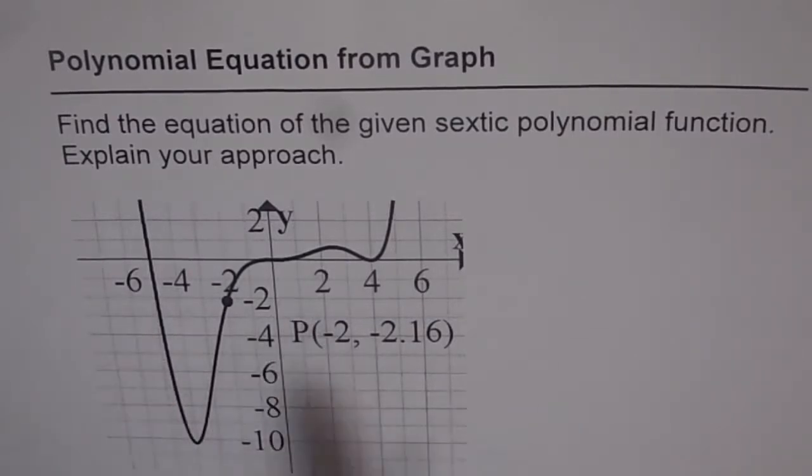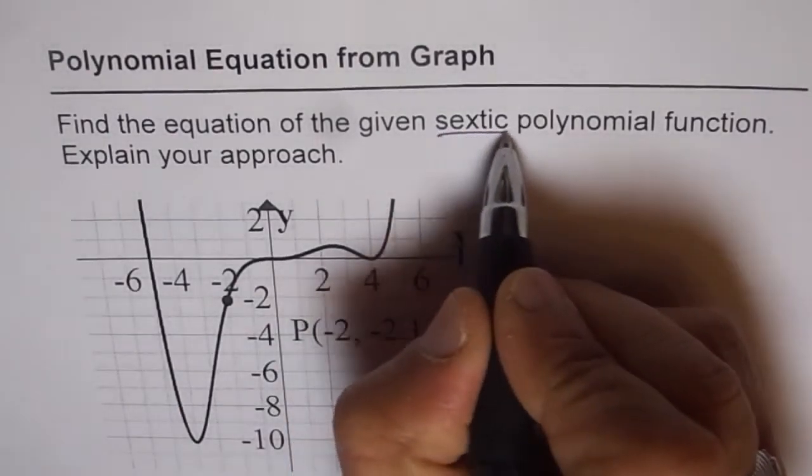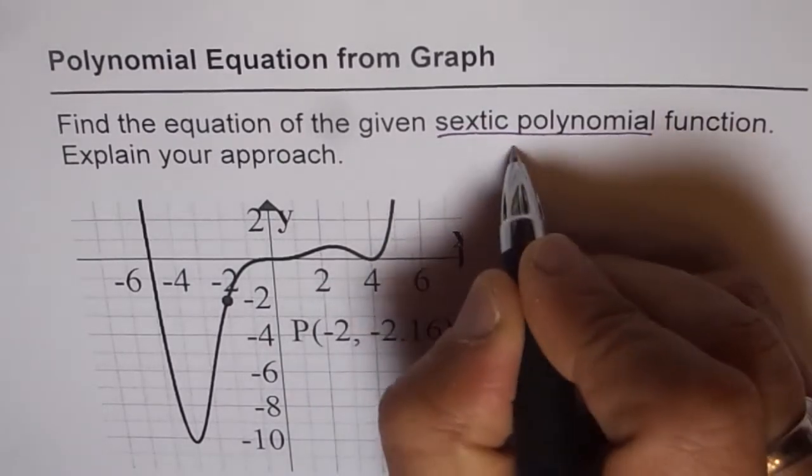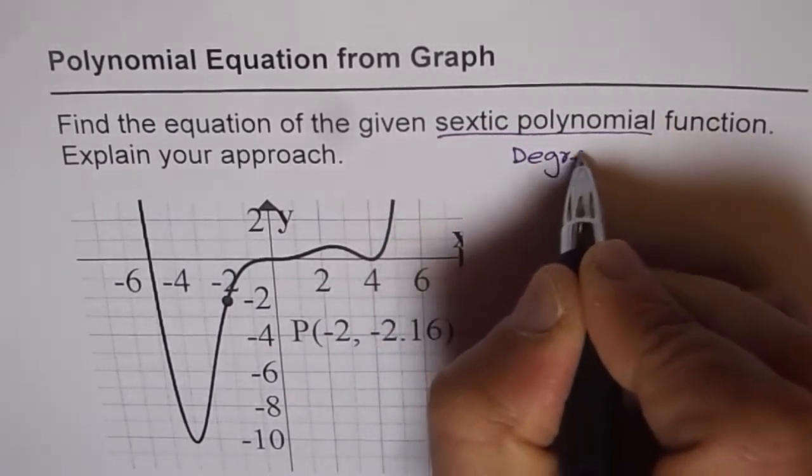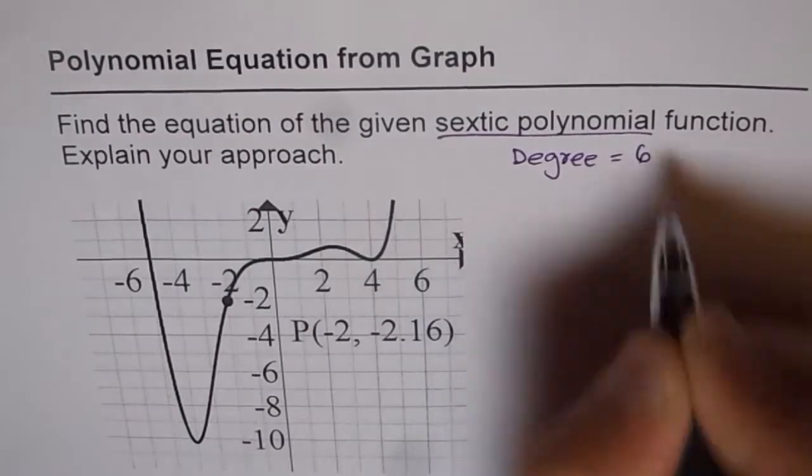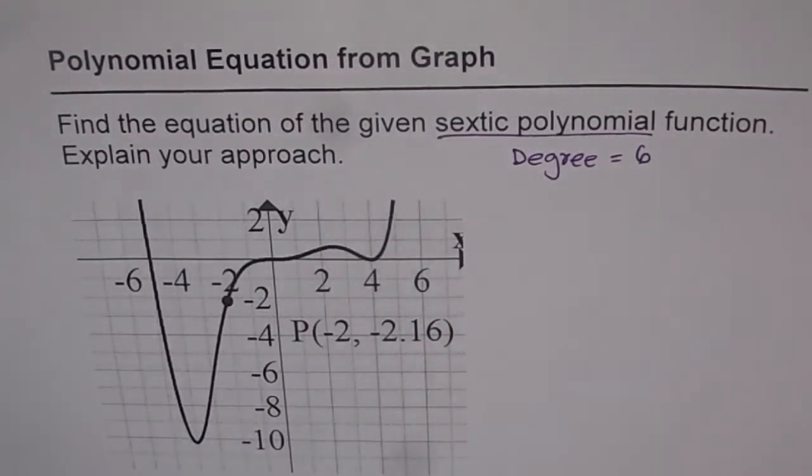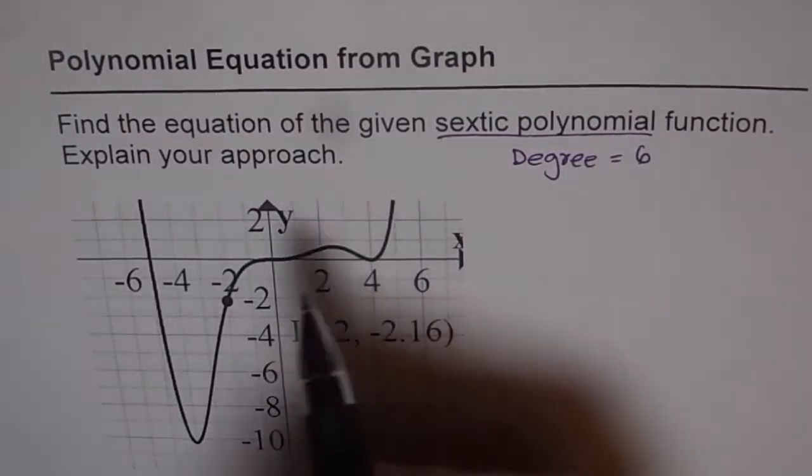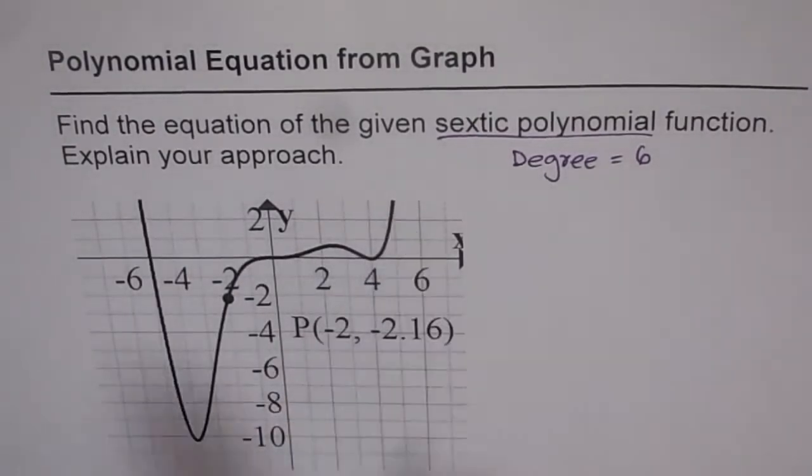Now here is the graph of the polynomial function and it is given to us that it is a sextic polynomial. It means what? It means that the degree is equal to 6. So 6 is the degree of our polynomial function. It is fine because both sides are going up so the leading coefficient is positive.